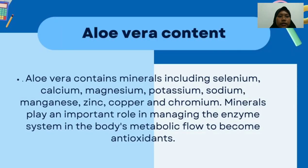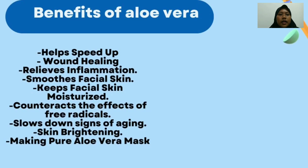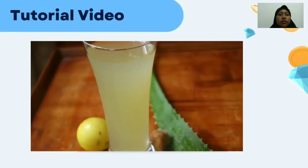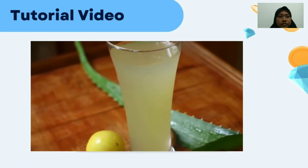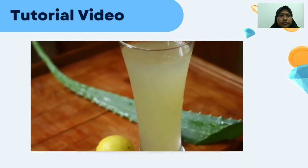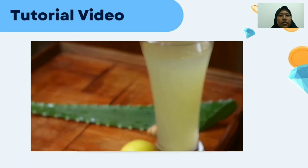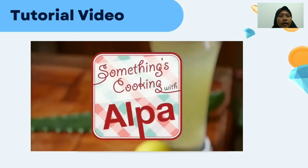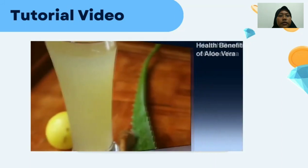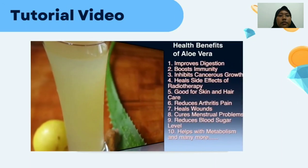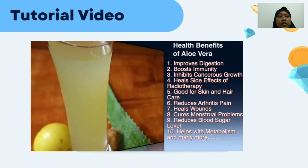Aloe Vera content includes minerals such as calcium, magnesium, potassium, sodium, zinc, copper, and thorium. These minerals play an important role in managing the enzyme system in the body and supporting metabolic flow.